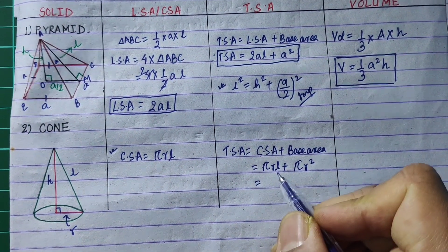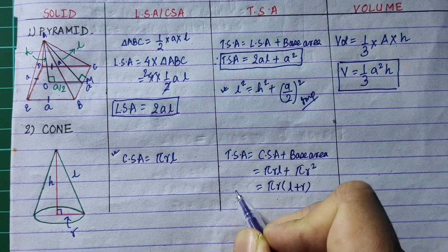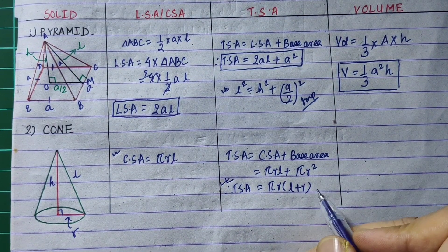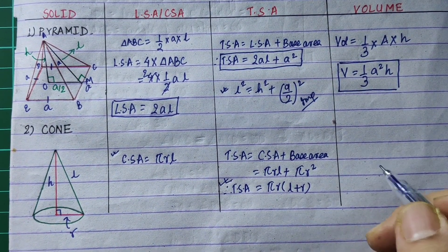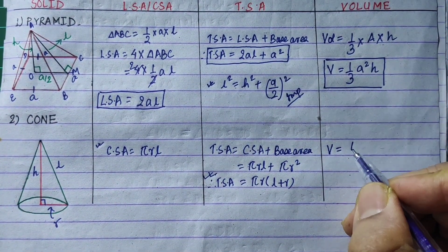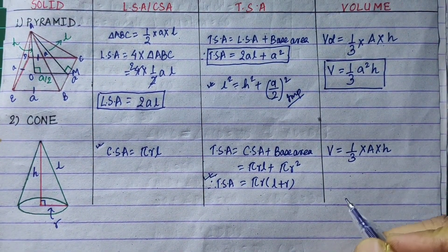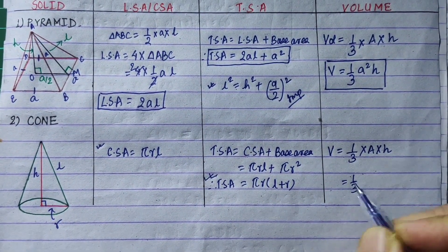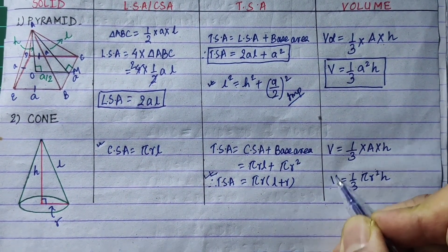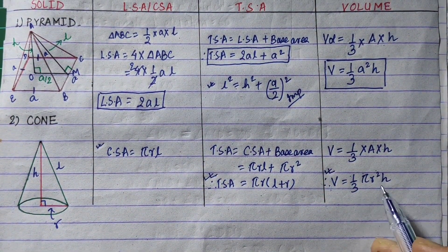Taking out the common value pi R, the TSA equals pi R into bracket L plus R. Finally, the volume of the cone is one-third into base area into height. Base area is pi R squared, so the volume formula is 1 by 3 pi R squared H.